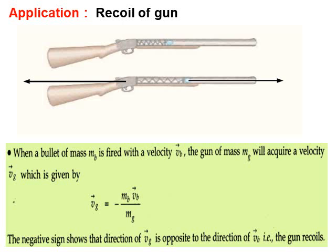Applications: Recoiling of gun. You know that when a bullet of mass MB is fired with velocity VB, the gun of mass MG will acquire a velocity of VG in the backward direction and it is denoted mathematically with a negative sign.